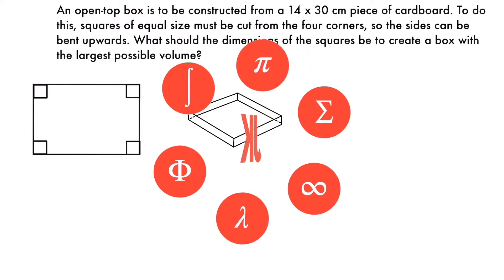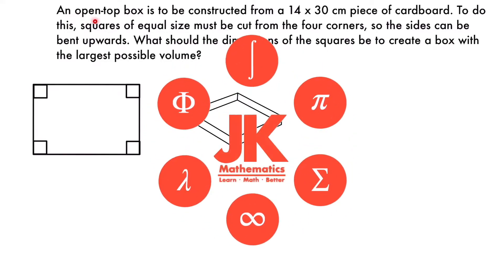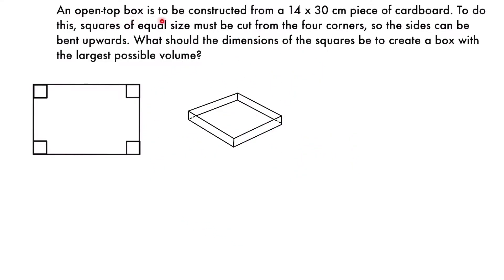Here we have an optimization problem where an open top box is to be constructed from a 14 by 30 centimeter piece of cardboard. To do this, squares of equal size must be cut from the four corners so the sides can be bent upwards. What should the dimensions of the squares be to create a box with the largest possible volume?